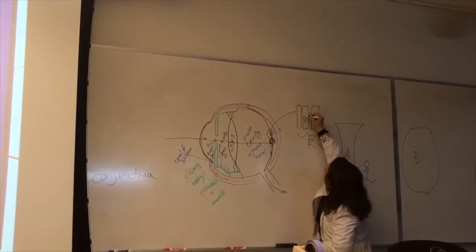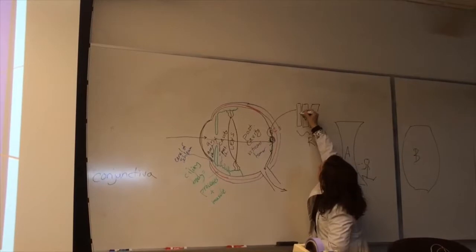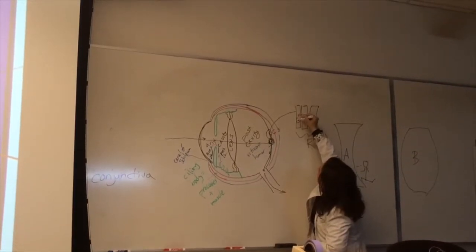P, B, that's for bipolar neurons, it's going to continue going this way to G, the ganglionic cells.